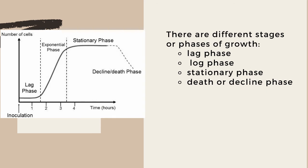When you talk about bacterial reproduction, this is actually a straightforward process in which each cell splits into two identical new cells. This process is called binary fission. Individual bacterial cells can divide and the bacterial population can double very quickly — in as little as 20 minutes in some species. However, bacteria do not continue growing at such a rapid rate indefinitely, because factors such as the availability of nutrients and rising toxin levels start to have an effect on bacterial growth. There are different stages or phases of bacterial growth: the lag phase, the log phase, followed by the stationary phase, and last would be the death or the decline phase.